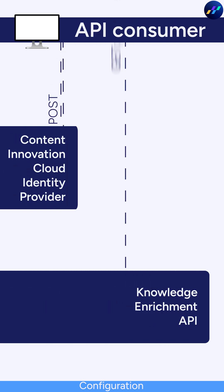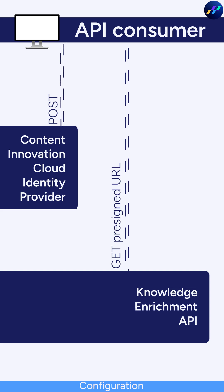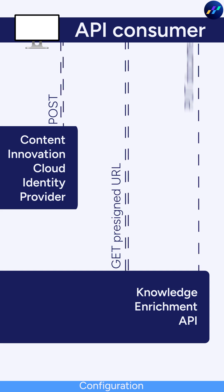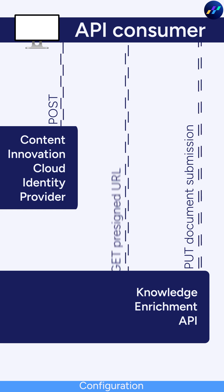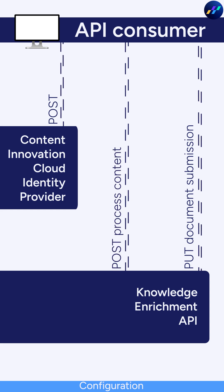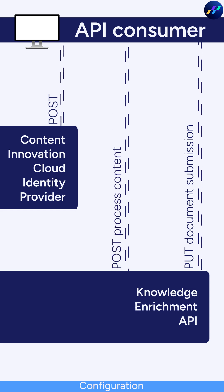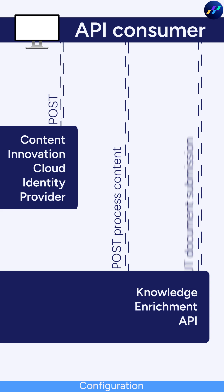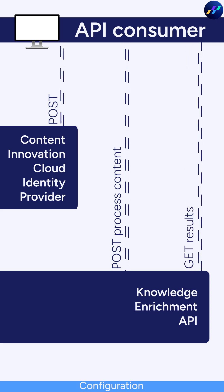Call the pre-sign endpoint to define your job and click the response. Next, submit your documents for processing to the provided pre-signed URL. Processing then occurs on the documents in their original format. And finally, retrieve your enriched output via the GET URL.